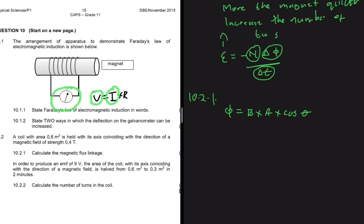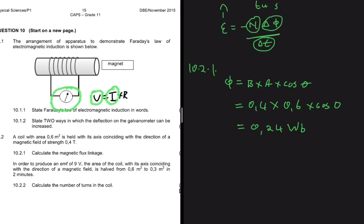Since the coil and the direction of the magnetic field coincide, our angle is zero. So this equals 0.4 tesla multiplied by 0.6 meter squared, multiplied by cos of 0, which is 1. That gives us 0.4 × 0.6 = 0.24 Wb (Weber).